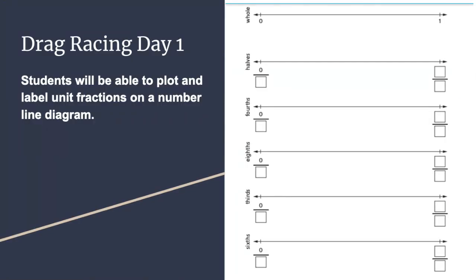Today our Freckle assignment is about drag racing. Drag racing is when two cars race on a road. The goal of today's lesson is that students will be able to plot — which means place — and label unit fractions on a number line diagram.